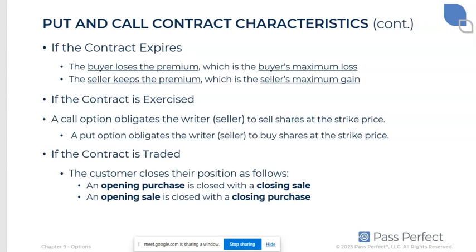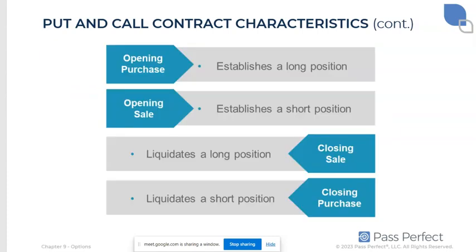They've closed it out. If they can buy it back for less than what they got for it when they sold it, they get to keep the difference as profit. So opening purchase means buy to open — a long or ownership position. If you sell to open, that's an opening sale — a short position, you now owe something. How do you get out from an opening purchase? You sell it again — that's an opening purchase followed by a closing sale. And if you sold something and want to get out from under that obligation, you can buy it back — a closing purchase. Buy to open, sell to close. Sell to open, buy to close.